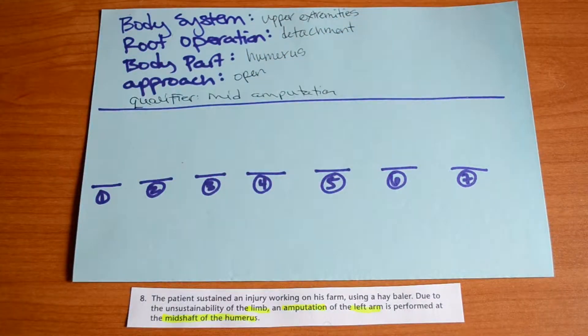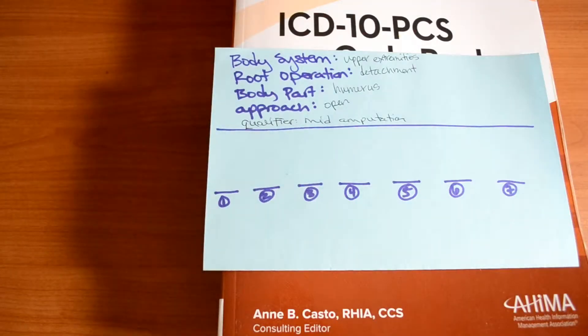So from there, we have quite a bit of information already to build our code. Now all we have to do is go into the book and actually find the correct characters and put them in the correct character placement. So with the information provided, we know the body system, so we could go right to that chapter of the code book. But if you are still uncomfortable with finding that body system, you can always go into the index.